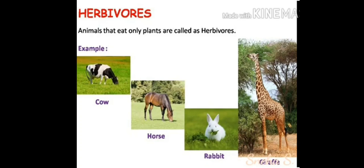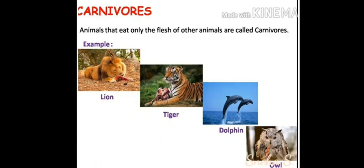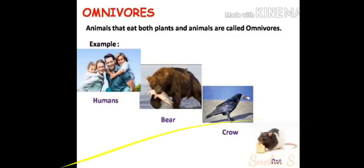We call plant-eating animals herbivores. Animals that eat only the flesh of other animals — we call them carnivores. Examples: lion, tiger. Animals that eat both plants and animals are called omnivores.